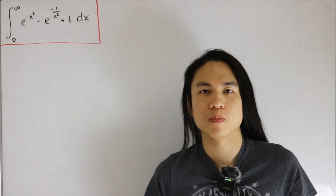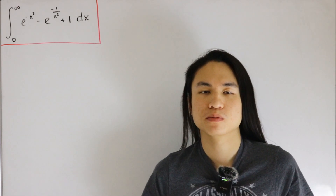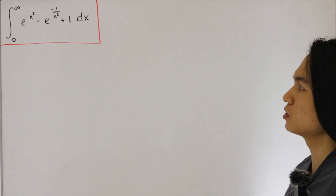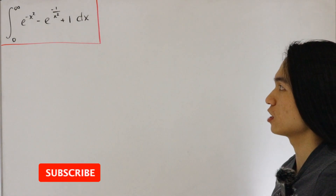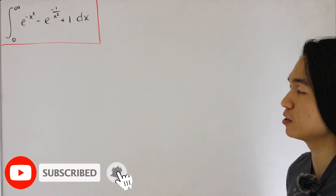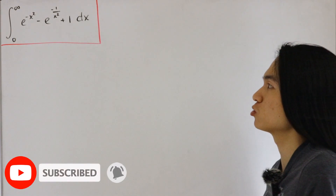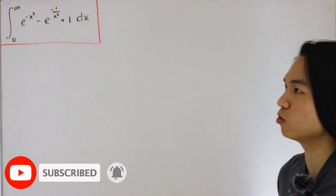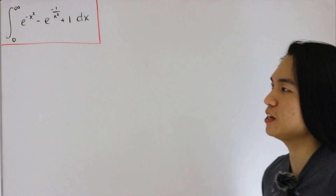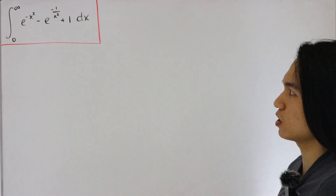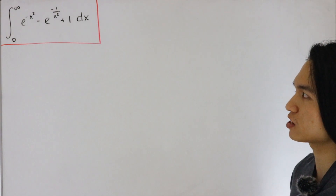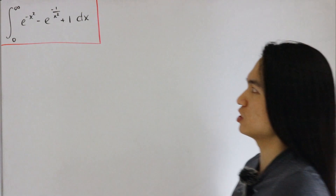Welcome back to another video. Today's video is going to be a short but interesting one, as we have the improper integral over the positive real line from zero to infinity of e to the negative x squared minus e to the negative one divided by x squared, plus one, dx.